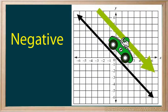Negative rate of change shows a decrease from left to right. The x value is increasing, and the y value is decreasing.